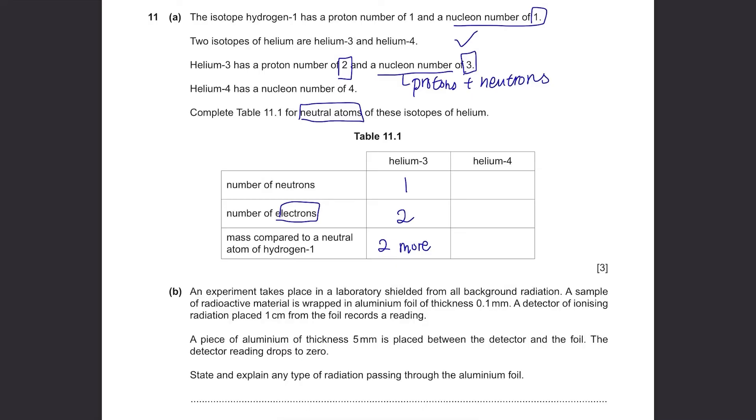Then same thing for helium-4. It has a nucleon number of 4. These are isotopes, so the number of electrons stay the same, 2, and the number of protons stay the same as well, also 2. But the nucleon number is 4, so 4 minus 2, it's 2 neutrons. And since its nucleon number is 4 compared to the hydrogen-1 where the nucleon number is 1, you can write that it's 3 more.